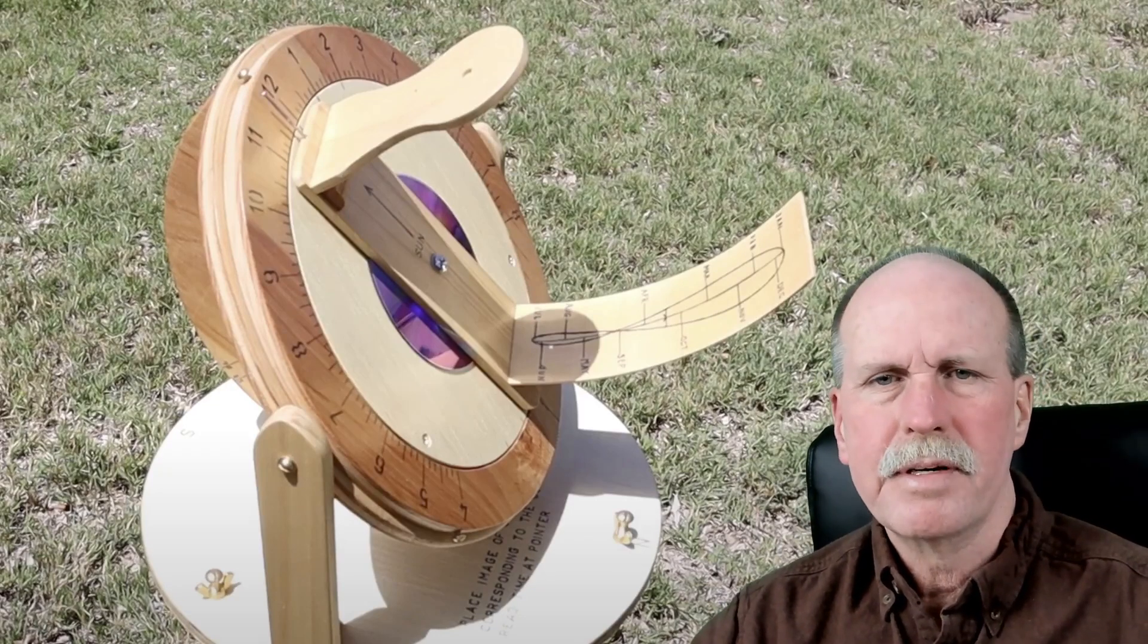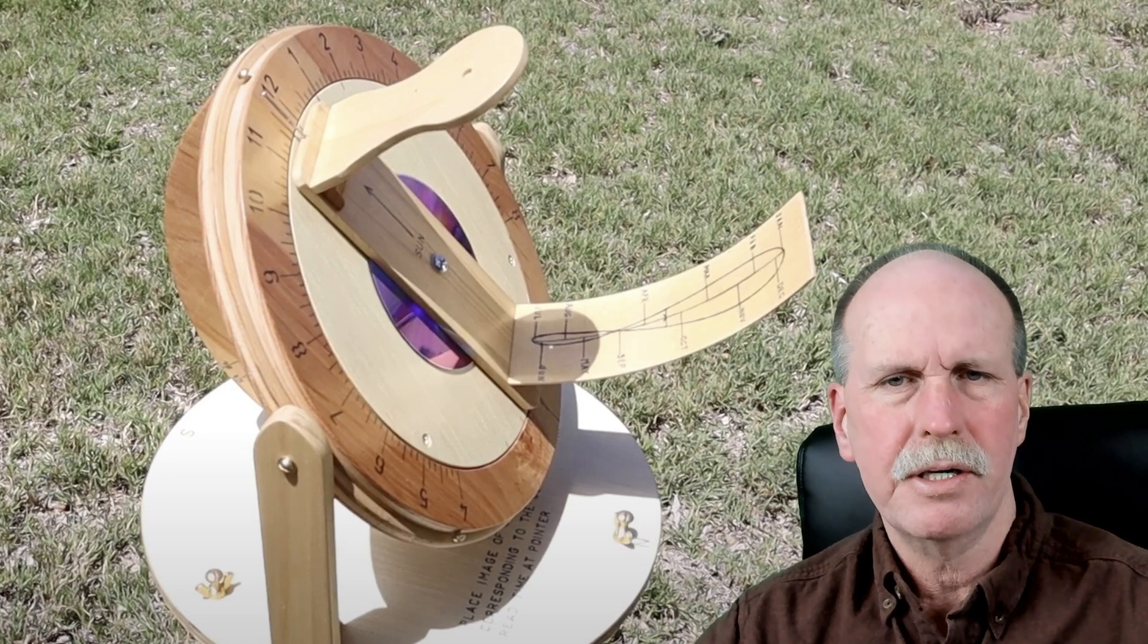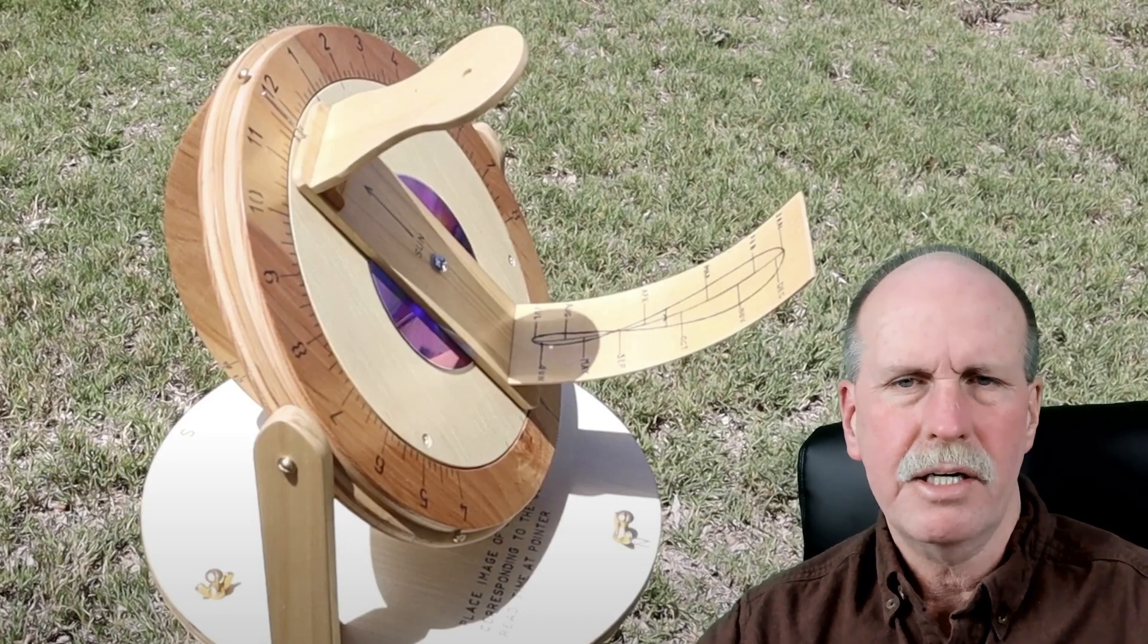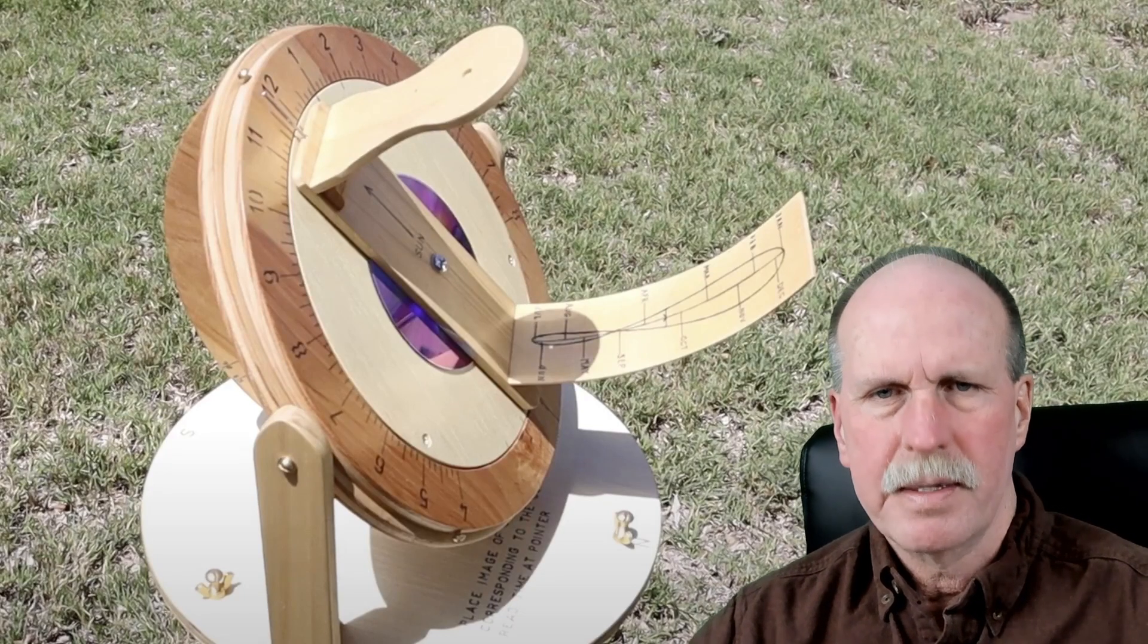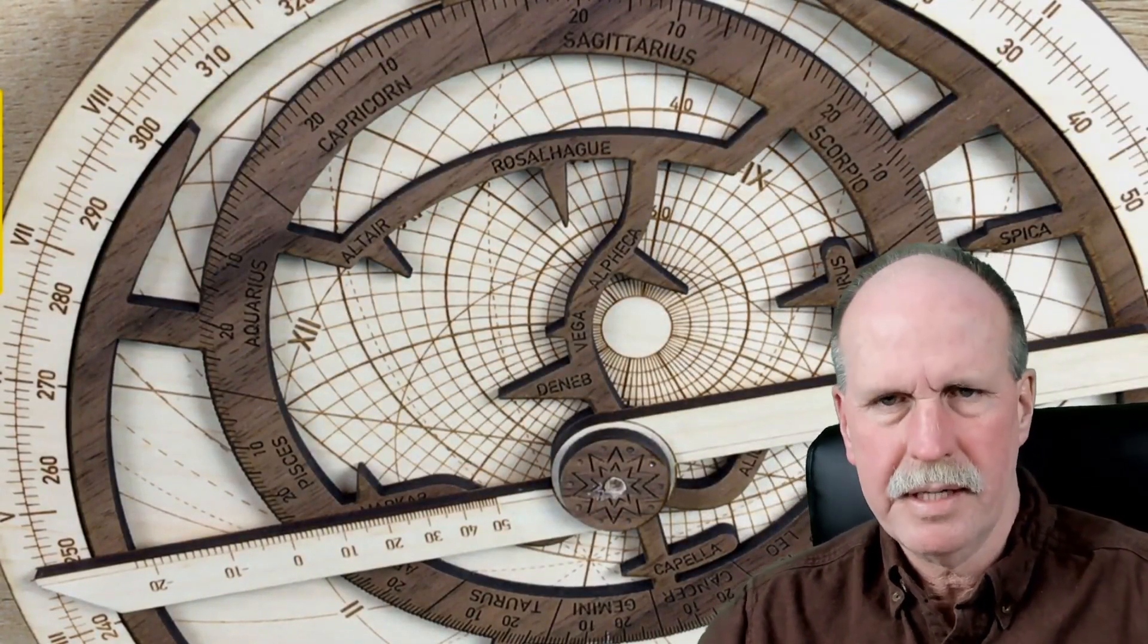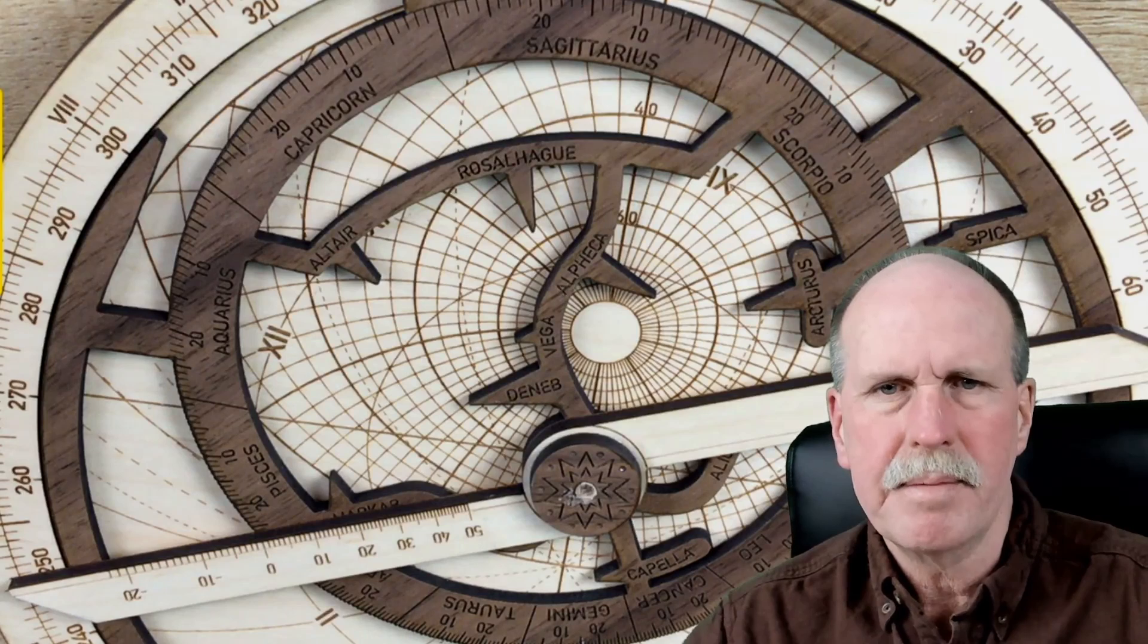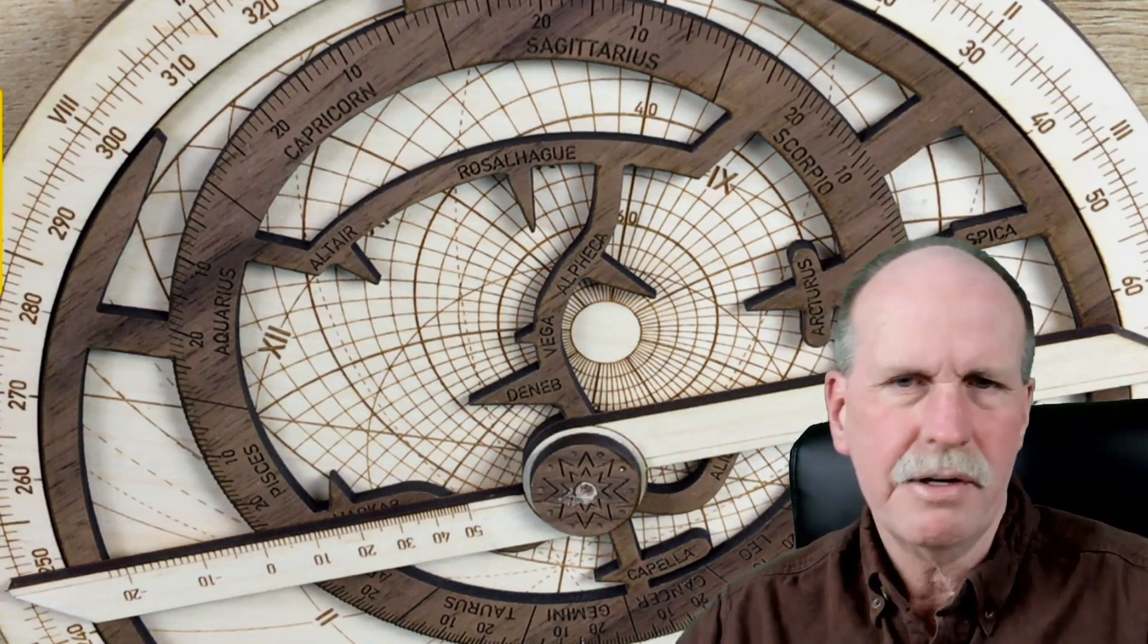But sundials have a little bit of a problem. You have to orient them properly. They have to be oriented to your latitude and to true north. And once you have them set in, you don't really move them very much. What they needed was something that was very portable. And that's where this device comes in handy. This is an astrolabe. So the subject of today's video is how do you tell the time on an astrolabe?